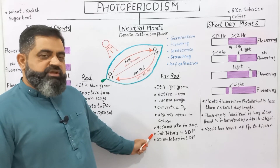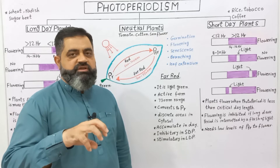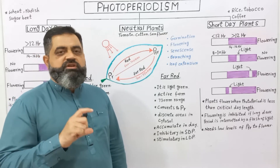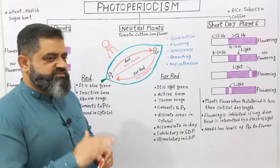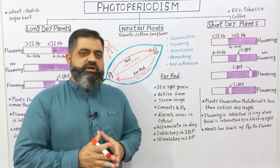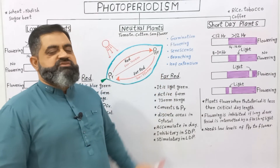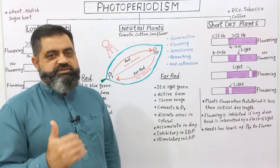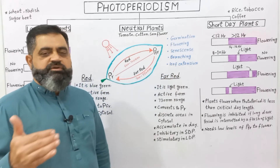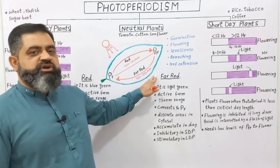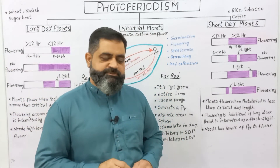Phytochrome far red (Pfr) has an inhibitory effect in short day plants — it inhibits flowering in short day plants if present in a great amount. It is stimulatory in long day plants. Some important functions of Pfr include germination of seeds, flowering, senescence, branching, and leaf expansion. The presence of Pfr in greater or lesser amounts affects these different processes in plants.